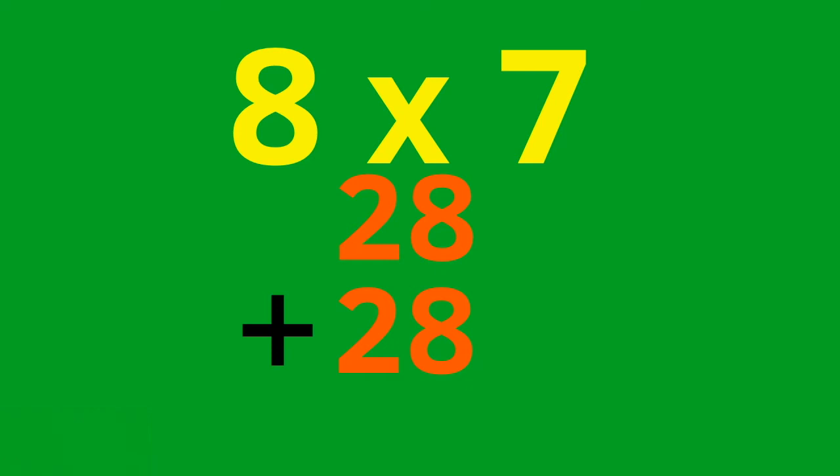Since 8 plus 8 equals 16, right away, I know the answer is going to end in a 6. So I know 8 times 7 is 56.